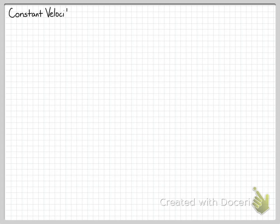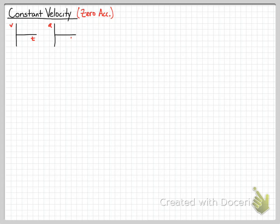Today we're going to talk about constant velocity and how that means zero acceleration, and then we'll get into what positive acceleration looks like and what negative acceleration looks like. So the first thing we're going to do is draw a quick graph of velocity versus time and talk about the things that we should know.